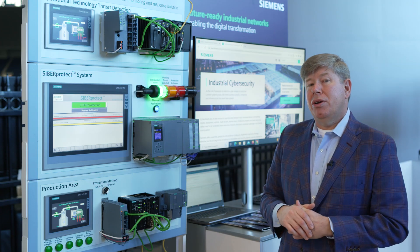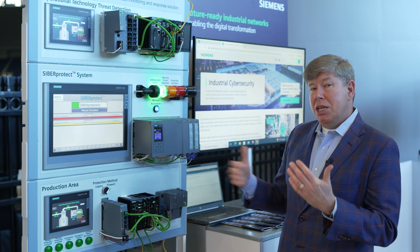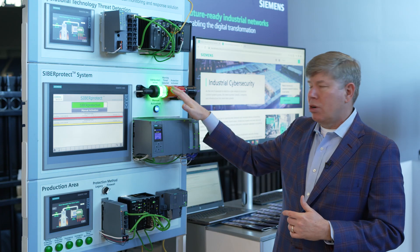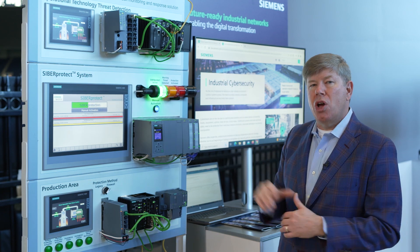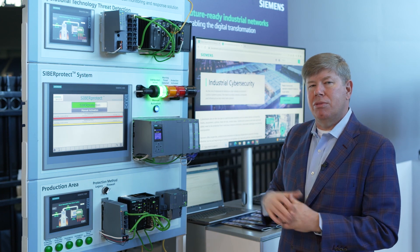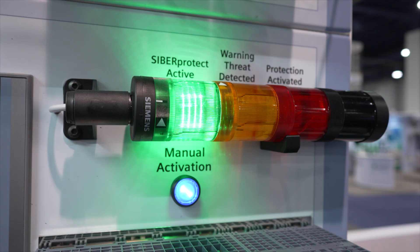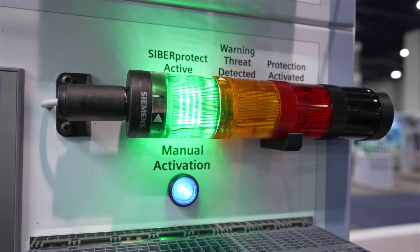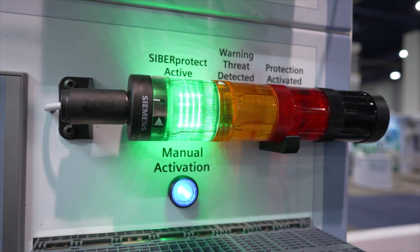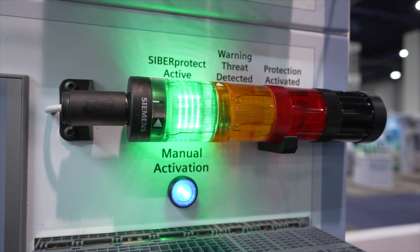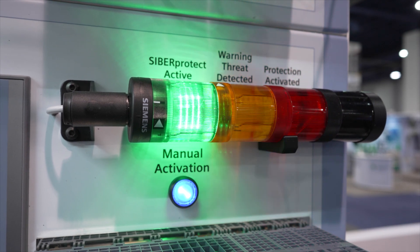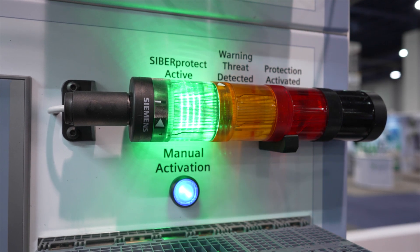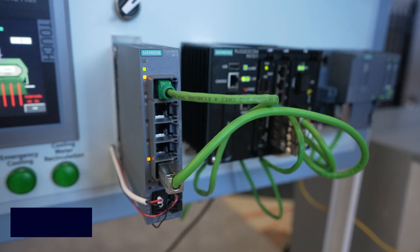Or if it's medium criticality, we'll turn on the yellow light and pulse the horn so that somebody knows that something has happened. Or if it's a high criticality event, we'll turn on the red light and leave the horn on until somebody silences it.